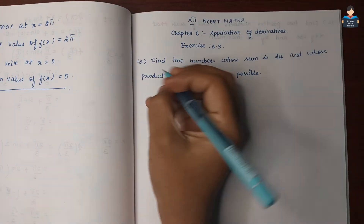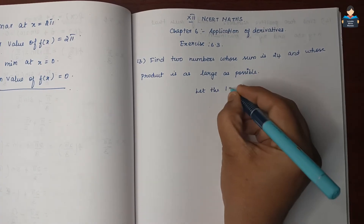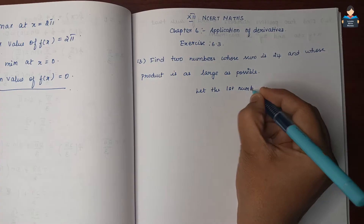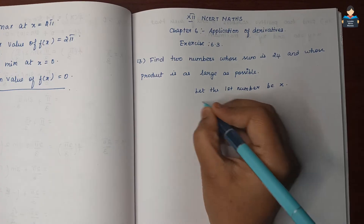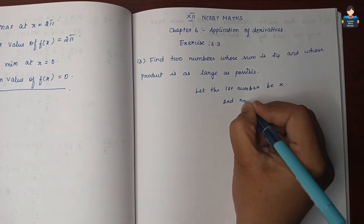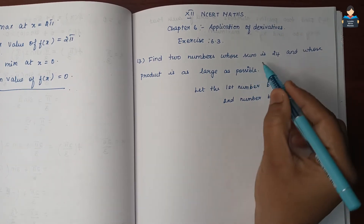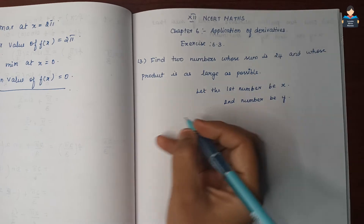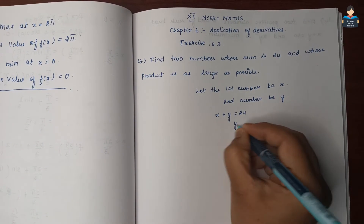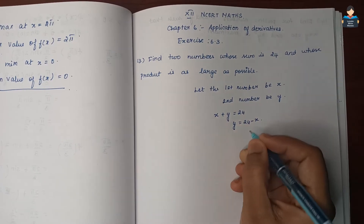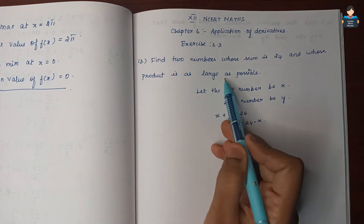Let the first number be x and the second number be y. The sum is 24, so x plus y equals 24, which gives y equal to 24 minus x.